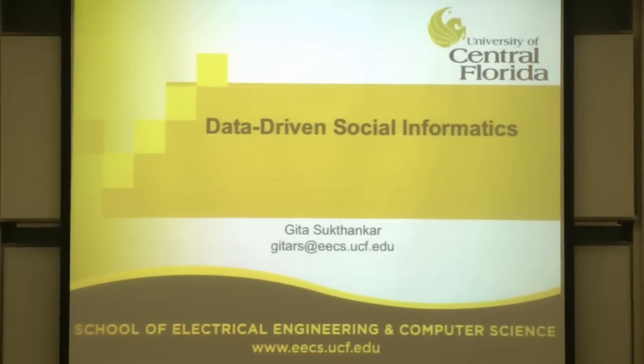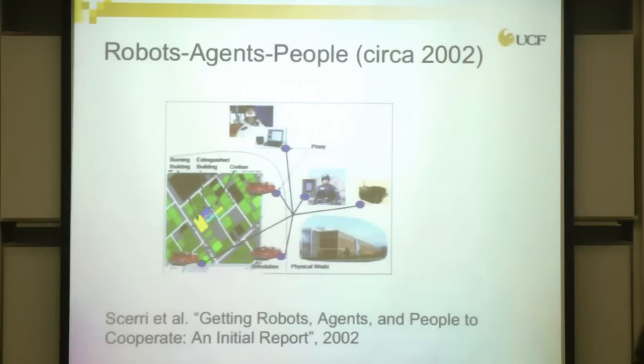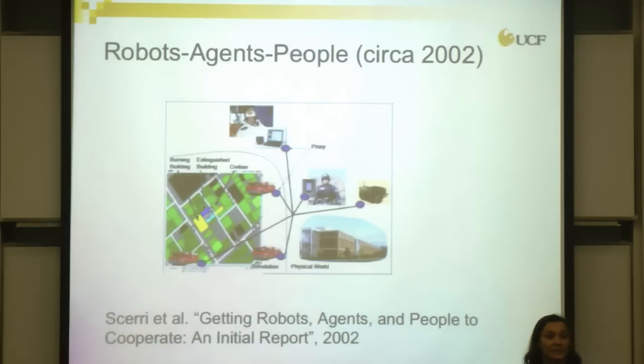What I am going to talk to you about today is my group's work on human behavior modeling. Since most of the audience is from the Robotics Institute, you can view this as a tutorial on how I think about the science of understanding large-scale RAP systems. RAP was a term popularized in the multi-agent systems community circa 2002. The idea was that having a system with a mixture of software agents, robots, and humans would prove to be a wicked coordination problem, but one very worth solving.